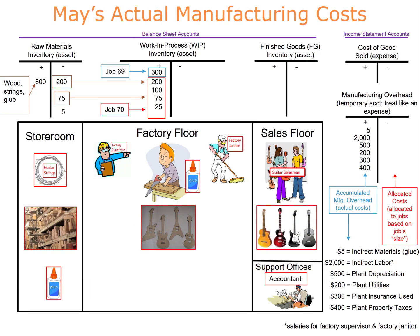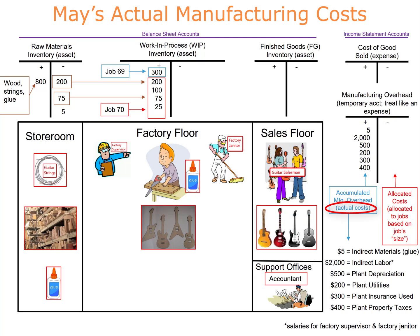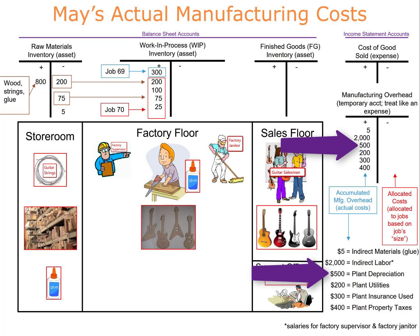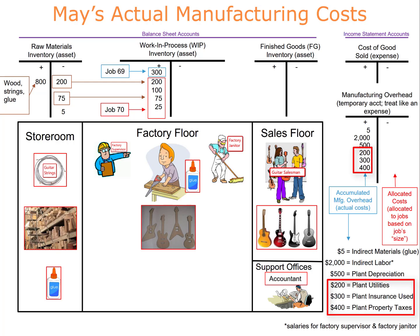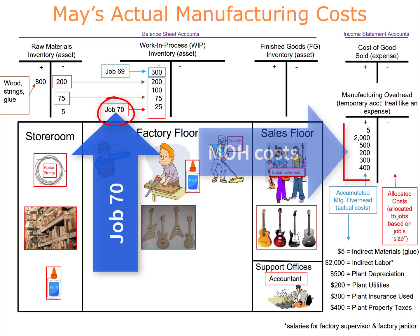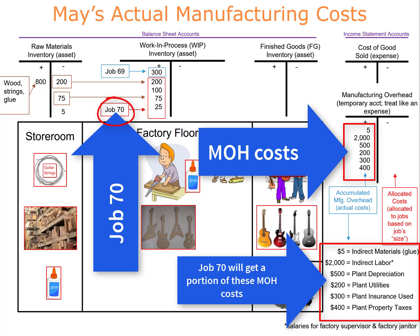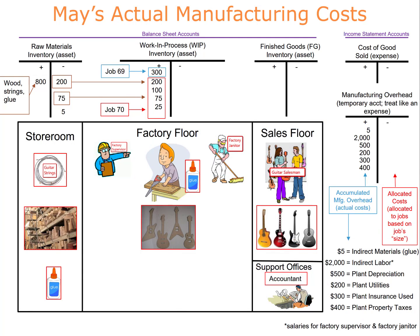Six actual costs have now been debited and accumulated to the manufacturing overhead account: $5 for indirect materials, $2,000 for indirect labor, $500 for plant depreciation, and others. This account is a temporary account treated like an expense — it temporarily holds actual manufacturing overhead costs. Later, when jobs are finished, such as job 70, a portion of these overhead costs is assigned to job 70's cost record. Notice that manufacturing overhead does not include office rent or office depreciation, because those are period costs, not product costs.